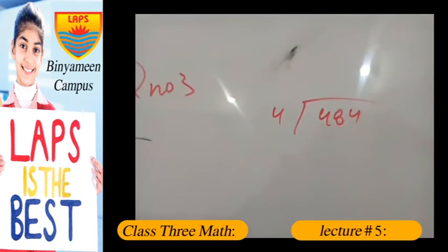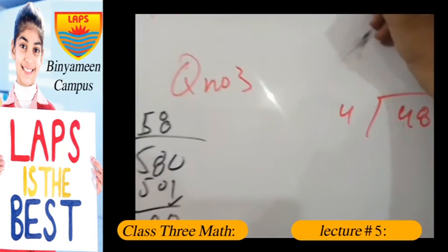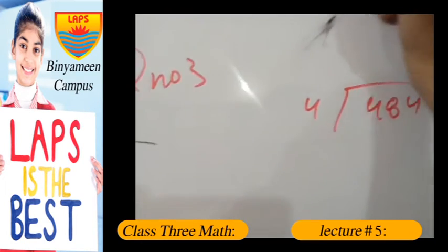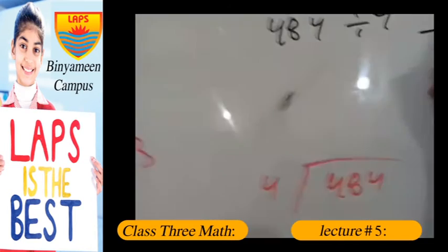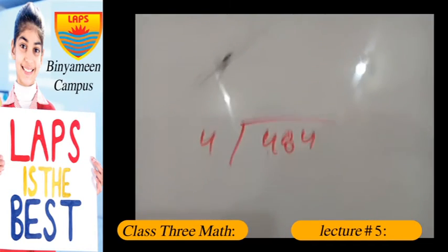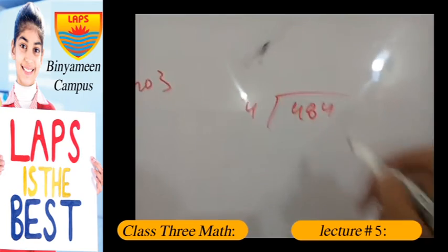Now for question 3, it is written like this: 484 divided by 4, and with a blank box for the answer. You can use your rough copies to solve this question.